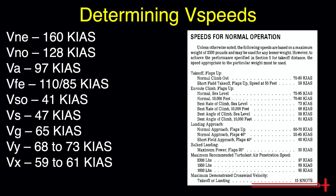Under all this, we can also find our maximum demonstrated crosswind velocity of 15 knots. This does not mean the landing gear turns to dust if you land with a 16-knot crosswind component. It just means that 15 knots is the maximum crosswind with which safety of control was demonstrated by the test pilot during certification tests for this aircraft.